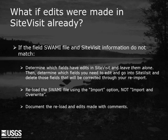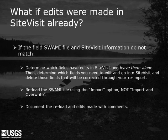If your office uses Method 1 — making edits in SiteVisit — or the original SWAMI file contains only a portion of the field visit, the following three steps must be followed. First, determine which fields have edits in SiteVisit and leave them alone. Then determine which fields you need to edit and delete those fields from SiteVisit — these will be replaced by the corrected SWAMI file. This will often be the entire discharge measurement, but in some cases may be a channel within the measurement or specific sensor inspections. Reload the SWAMI file using the Import option, not Import and Overwrite. The new file should have the same name as the first file loaded to ensure only one version is available in the blob space. Document the reload and the edits made with comments at the top SiteVisit level node.